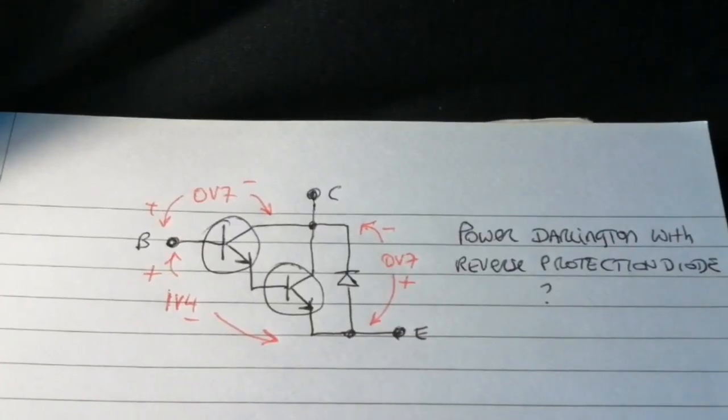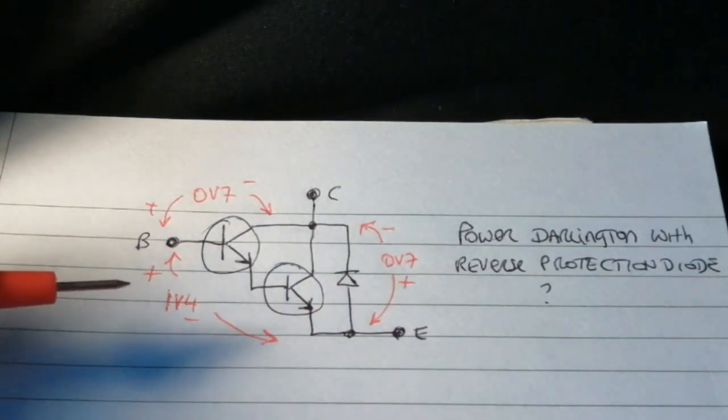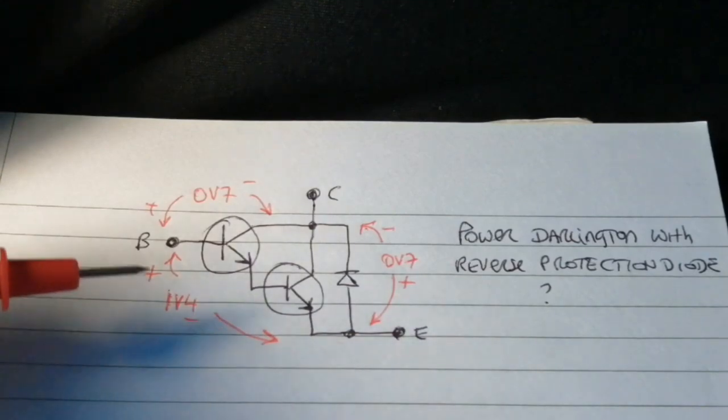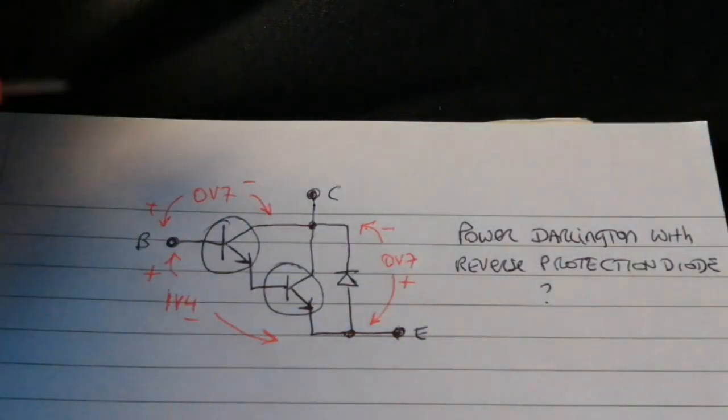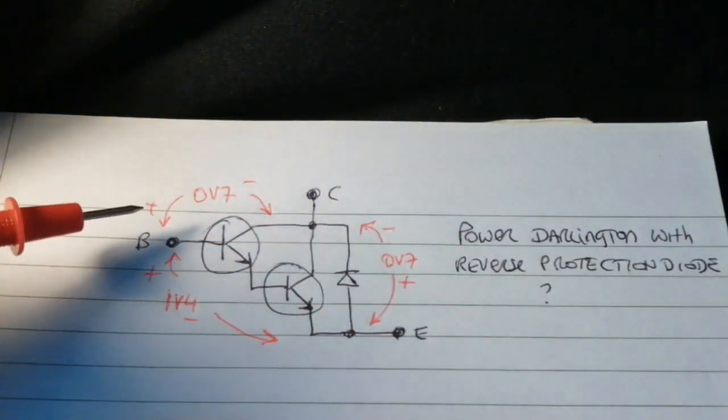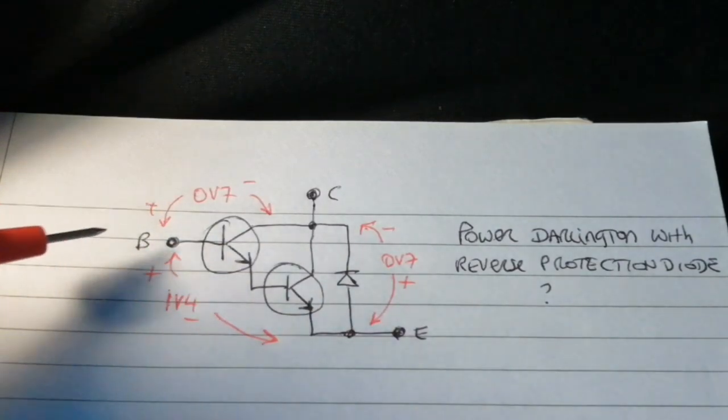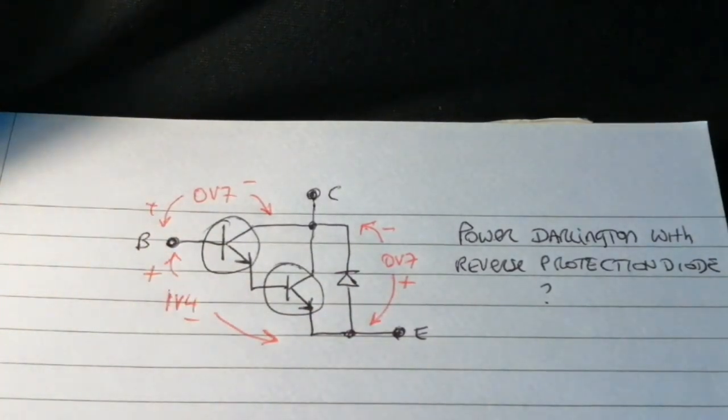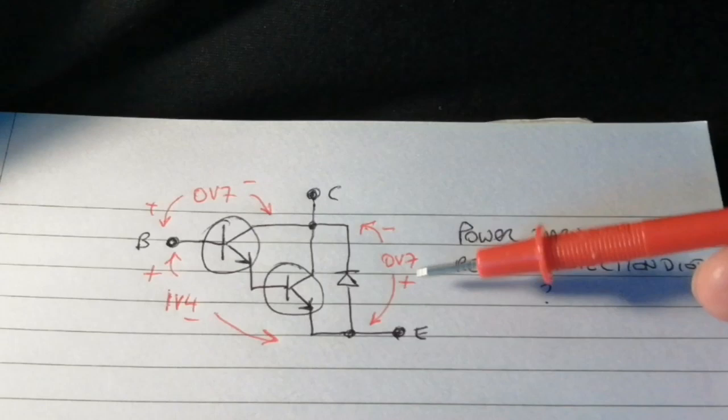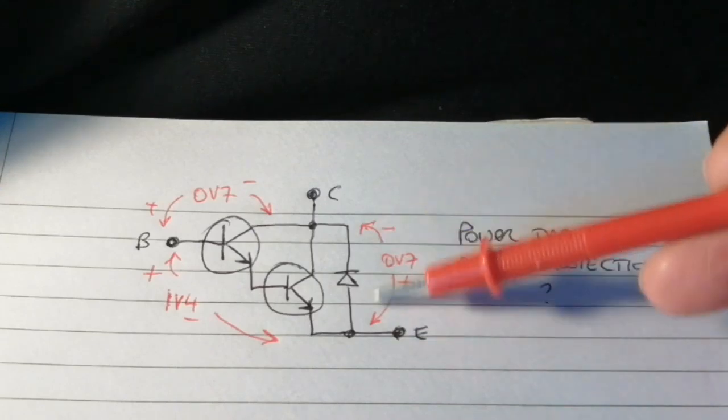Now I knew this device was a power Darlington with a reverse protection diode, so I expected the voltages to look like this when I tested them on the diode test facility on the meter. I'd expect 1.4V from base to emitter, 0.7V from collector to base, and in the reverse direction 0.7V from collector to emitter.